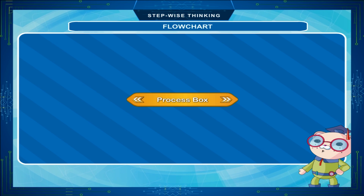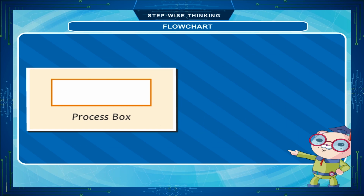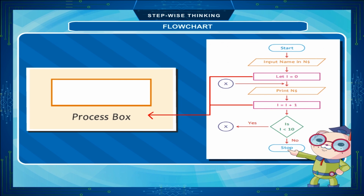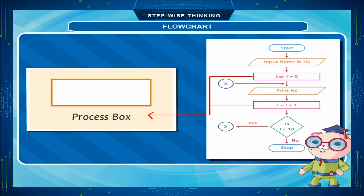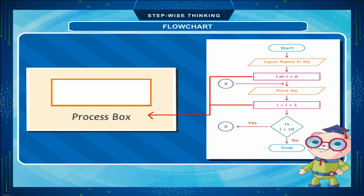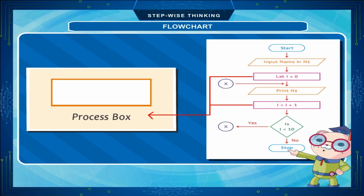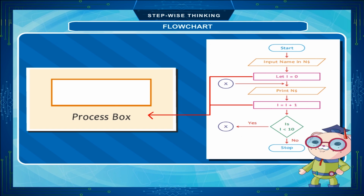Process box: The process box is rectangular in shape, where all the steps involving processing work are written inside it. To calculate numbers or to assign some values to variables, this processing box is used. In one process box, only one step is written, so you can use as many boxes as needed, one by one, related to the number of processing steps to be taken.